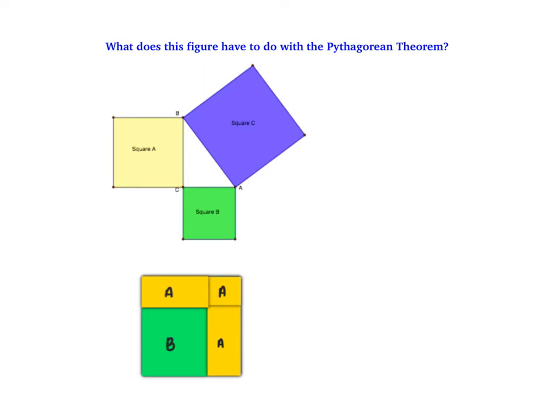A lot of times when you're working with the Pythagorean Theorem, you'll see a figure like this. We have to think about what does that figure have to do with the Pythagorean Theorem. To start, let's review how to find the area of a square. Since a square has all sides equal, the area would be side squared.